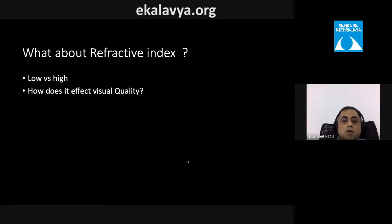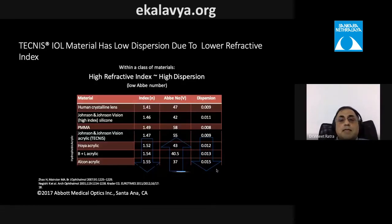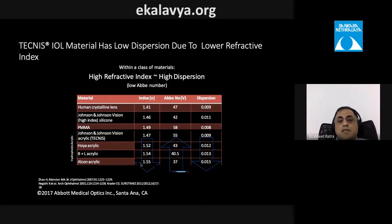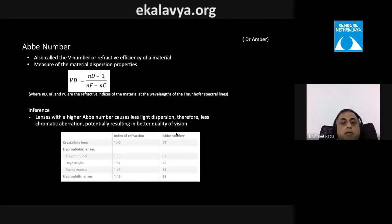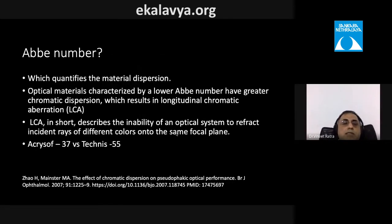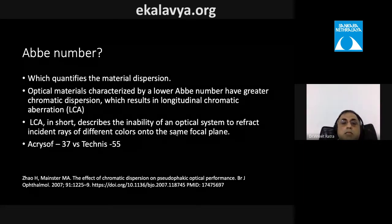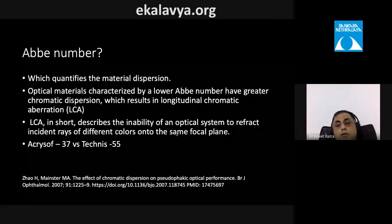Regarding refractive index: a high refractive index means high dispersion and a low Abbe number. As refractive index decreases, dispersion decreases and the Abbe number increases. The Abbe number quantifies material dispersion — materials with low Abbe numbers have greater chromatic dispersion, causing longitudinal chromatic aberration: the inability of the optical system to focus different wavelengths of light onto the same plane.